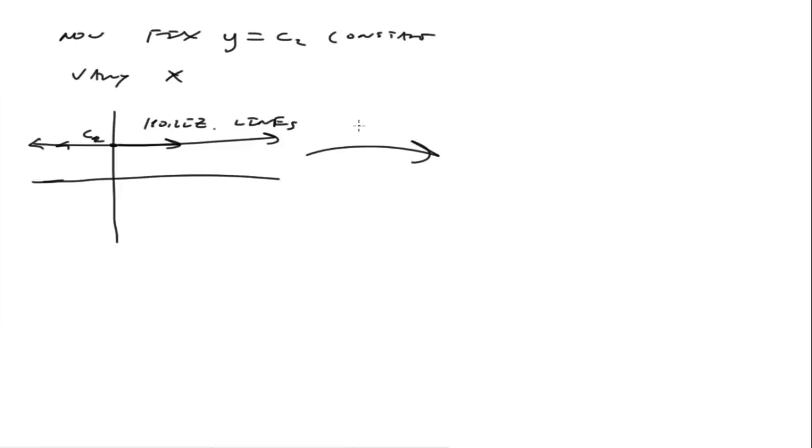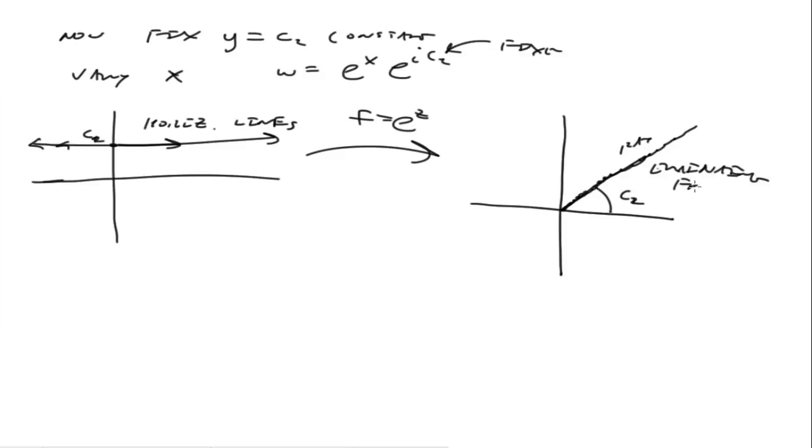And what do they map to, given our exponential function e to the z? Well, we can do the analysis. It's going to be w equals e to the x times e to the ic2. So c2 is fixed. So that will be a particular angle c2. And x will vary from negative infinity to infinity and will produce a ray emanating from the origin.